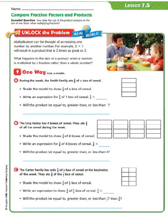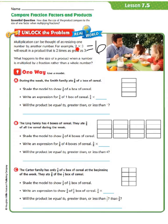Let's look at Unlock the Problem. This is not actually going to give us a word problem per se. It's going to give us a real world example. Multiplication can be thought of as resizing one number by another number. For example, 2 times 3 will result in a product that is 2 times as great as 3. When we multiply a whole number by a whole number, that product is going to be a bigger number than either one of our factors — our factors are 2 and 3, and 2 times 3 equals 6, which is bigger than either factor.